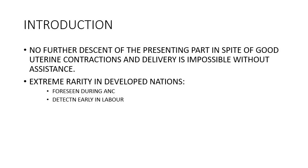From there you can start thinking of causes: when the passenger might be too big, or when the passage might be too small. When there is no longer progression of the presenting part, in spite of good uterine contractions — about three to five contractions every 10 minutes, each lasting 40 to 50 seconds — yet the presenting part is still at least at station zero, then you know there's obstructed labor.